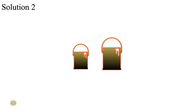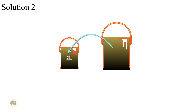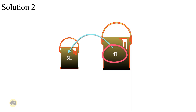Here is how to achieve this: fill the 5-liter bucket and pour 3 liters of it into the 3-liter bucket, then empty the 3-liter bucket. This leaves 2 liters in the 5-liter bucket. Dump those 2 liters into the 3-liter bucket, fill up the 5-liter bucket, and pour 1 liter into the remaining space in the 3-liter bucket — leaving 4 liters in the 5-liter bucket. The first approach has more steps; it's good to know both.